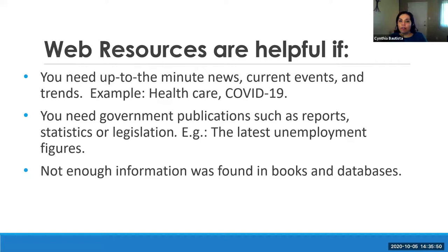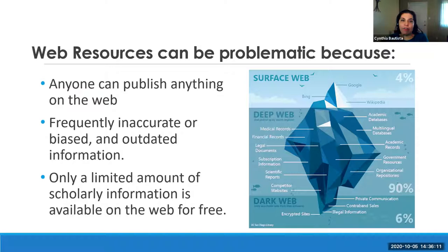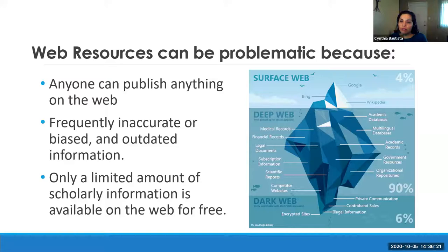Also, if you're looking for government publications, reports, or statistics such as the latest unemployment figures, you're going to have to go to a website for that information. And sometimes you just don't find enough information in books and databases. We do have to remember that when searching online, there are a lot of issues to be careful with. Anybody can publish anything on the web, so you have to be careful about where you're finding your information and who wrote it. There's frequently inaccurate, biased, and outdated information on websites.